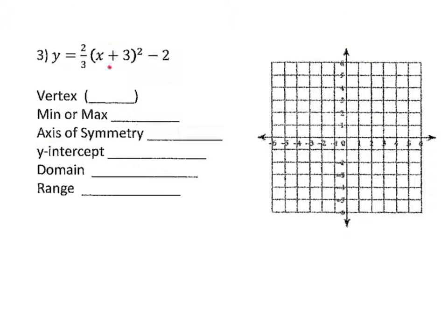Now let's look at the third problem. We have a plus 3 on the inside and a minus 2 on the outside. A plus sign on the inside means going left 3. A minus sign on the outside means going down 2. So the vertex is at negative 3, negative 2.